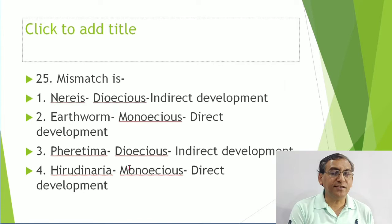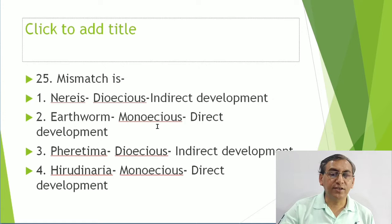For the mismatch question: Nereis is dioecious - correct; shows indirect development - correct. Earthworm is monoecious - correct; direct development - correct.